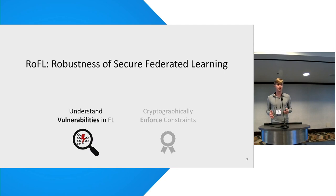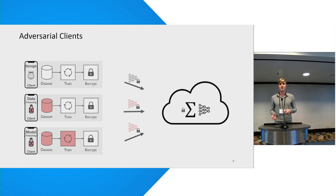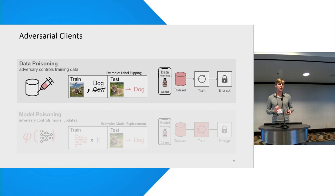What type of attacks have we seen in federated learning so far? The goal of these attacks is to influence the behavior of the global model for a specific set of samples. We have seen two types of adversaries in FL: the data poisoning adversary and the model poisoning adversary. The data poisoning adversary only controls the training dataset of the clients, for example by injecting malicious samples of Swiss cows labeled as dogs, so compromised clients still follow the training process honestly.